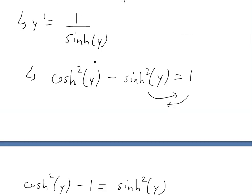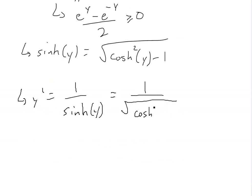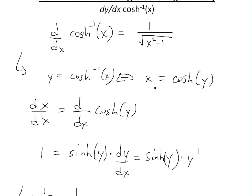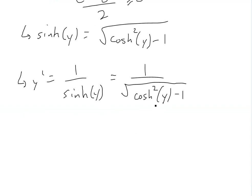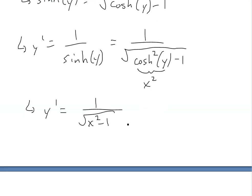Now we plug this into the derivative expression. y prime equals 1 divided by the square root of hyperbolic cosine squared of y minus 1. From the inverse function relationship, we know x equals hyperbolic cosine of y, so hyperbolic cosine squared of y is just x squared. Therefore y prime equals 1 divided by the square root of x squared minus 1, which is d/dx of the inverse hyperbolic cosine of x.